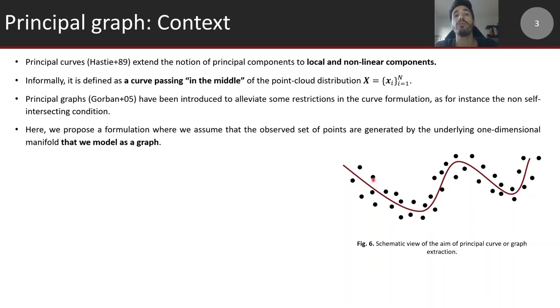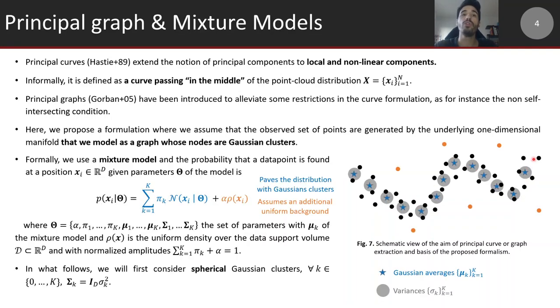It's an extension of principal components to local and non-linear components. Principal graphs have been introduced in this context to alleviate some drawbacks of the curve formulation. Here we assume that the underlying filamentary pattern can be modeled as a one-dimensional manifold that we model itself as a graph structure whose nodes are actually Gaussian clusters paving the galaxy distribution in its middle and linked together by a graph structure.